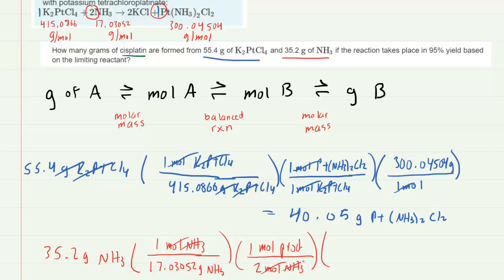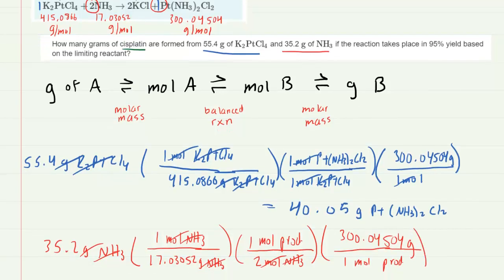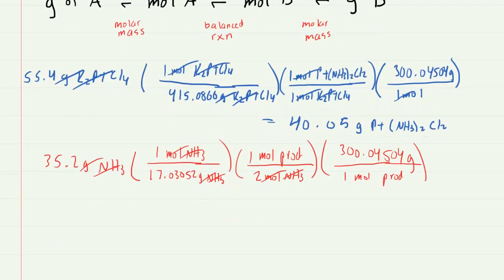The moles of NH3 cancel as did the grams, and now we go from moles of the product to grams by using once again the molar mass. So one mole of product on the bottom here is 300.0454 grams. Let's pick up our calculators and punch this in as well. When we do so we get about 310.08 grams of the product.